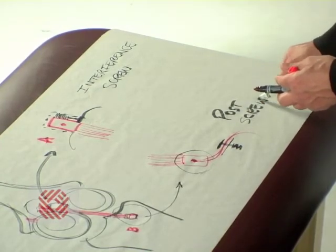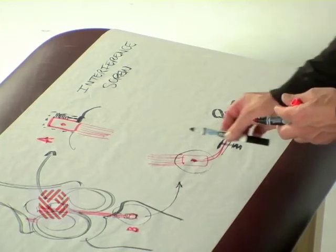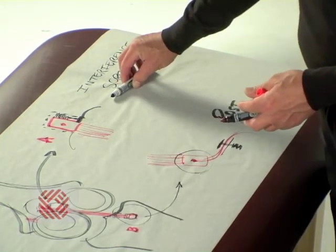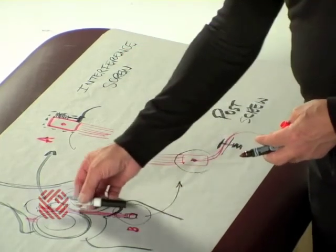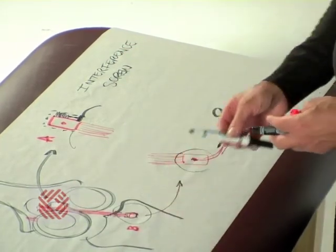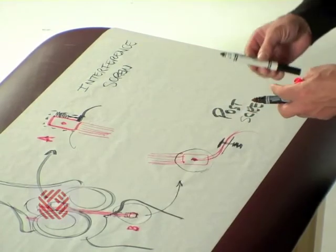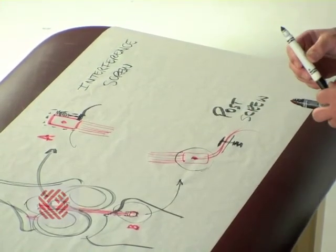Now, some surgeons prefer even on this tunnel to use an interference screw. In either case, we now have firm fixation of our graft in the tunnels. And we can start moving the patient's knee immediately.